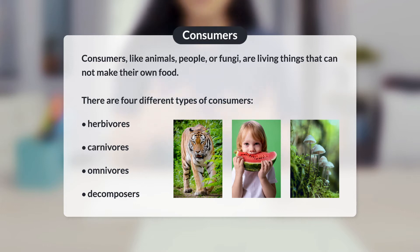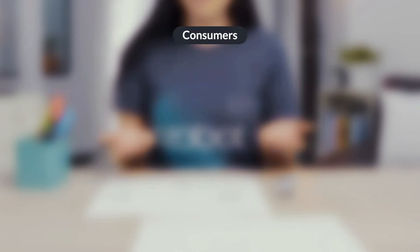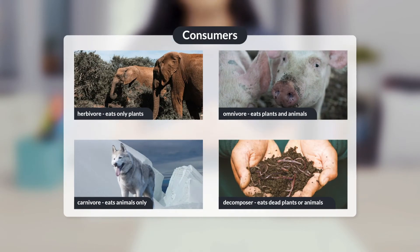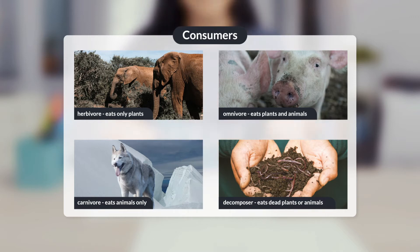There are four different types of consumers: herbivores, carnivores, omnivores, and decomposers. Herbivores eat only plants. A carnivore eats animals only. An omnivore eats plants and animals. A decomposer eats dead plants or animals.